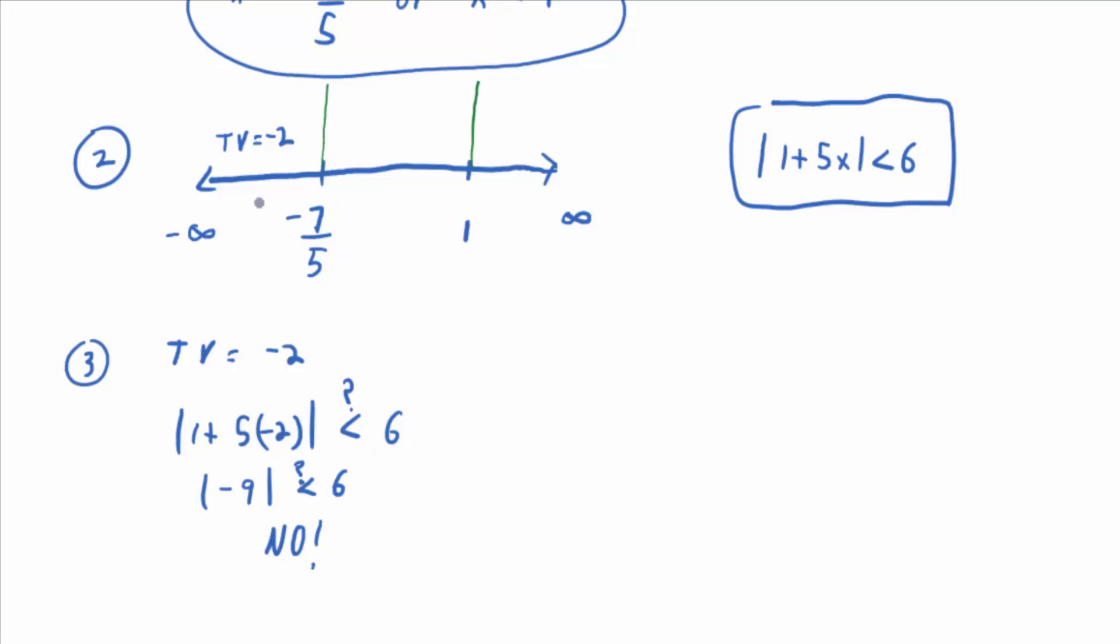So we don't shade in that region. What's your next test value going to be in between negative 7 fifths and 1? Don't make it difficult. Make it something easy to work with. A test value of 0. So the idea is you plug a 0 in there. Do you get a true statement?